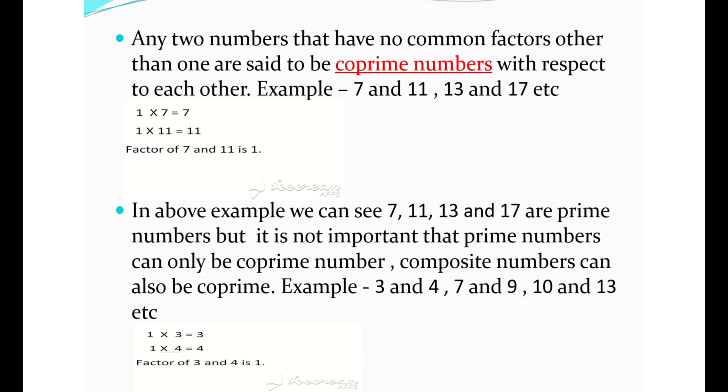Any two numbers that have no common factors other than one are said to be coprime numbers with respect to each other. For example, 7 and 11, 13 and 17. In this example, we can see 7, 11, 13, and 17 are prime numbers, but it is not important that prime numbers can only be coprime. Composite numbers can also be coprime, for example 3 and 4.